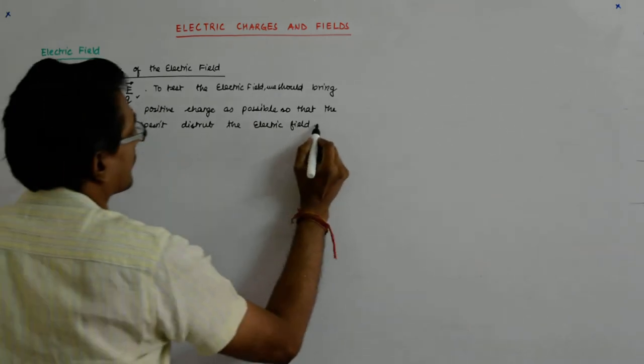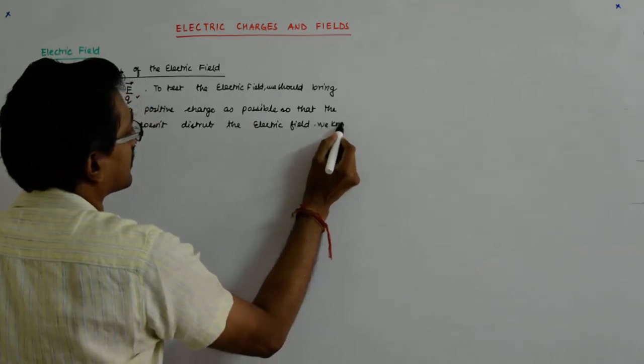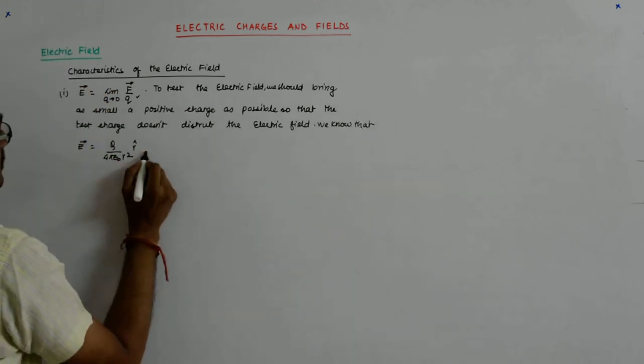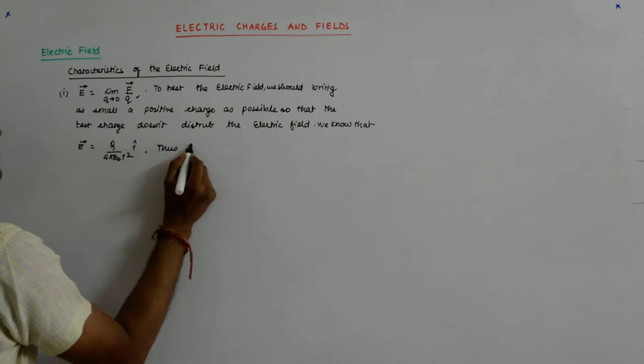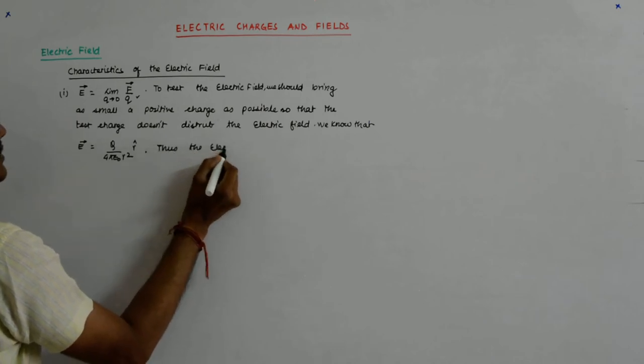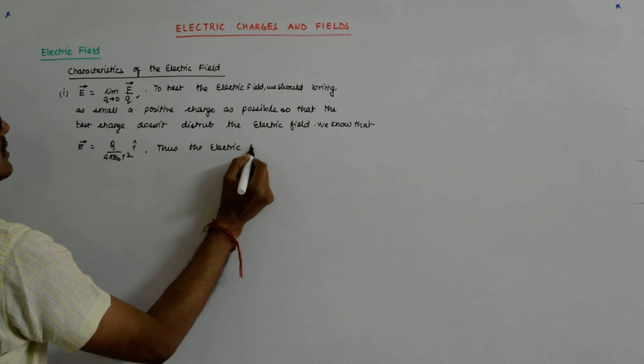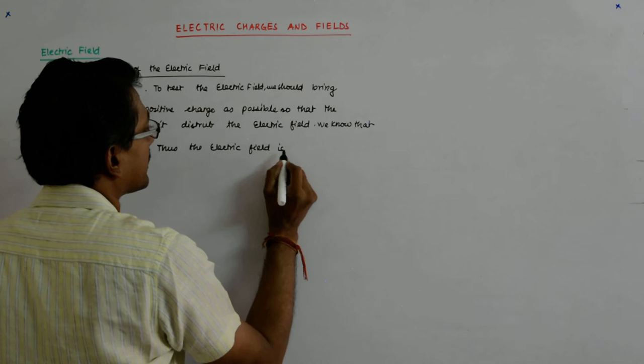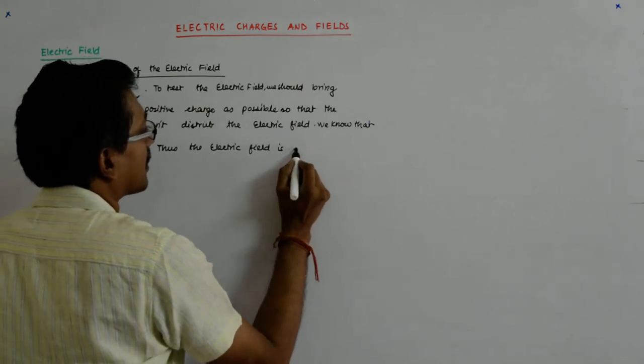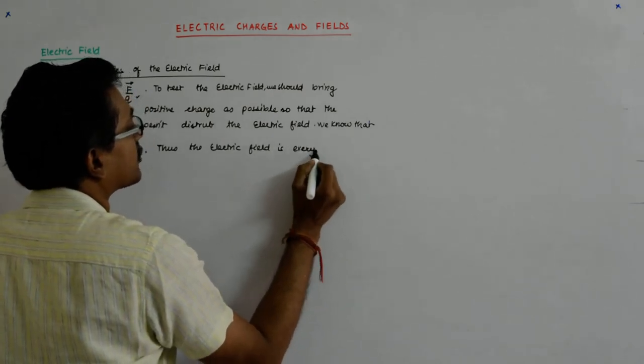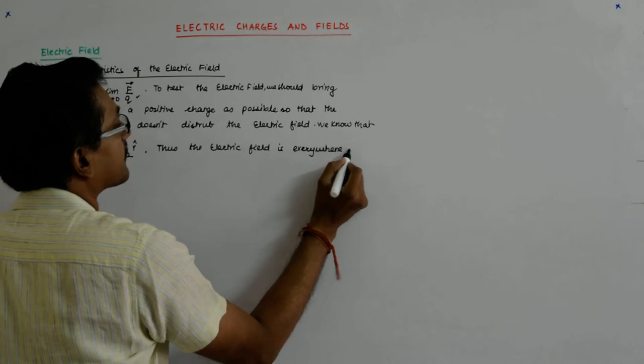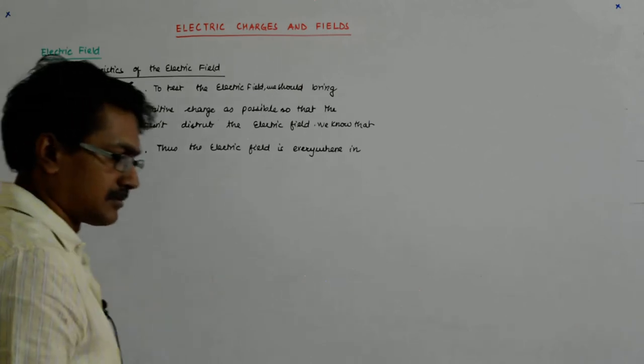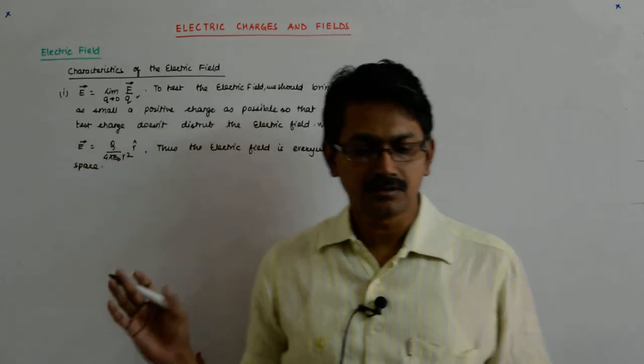So we know that the electric field is everywhere in space, is everywhere in space. Normally we keep on drawing on a board or on a paper.